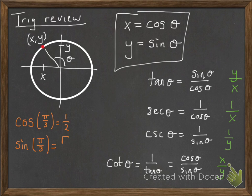Now, there are a bunch of trig values that you need to know. For example, cosine of pi over 3 is 1 half, and sine of pi over 3 is square root 3 over 2.